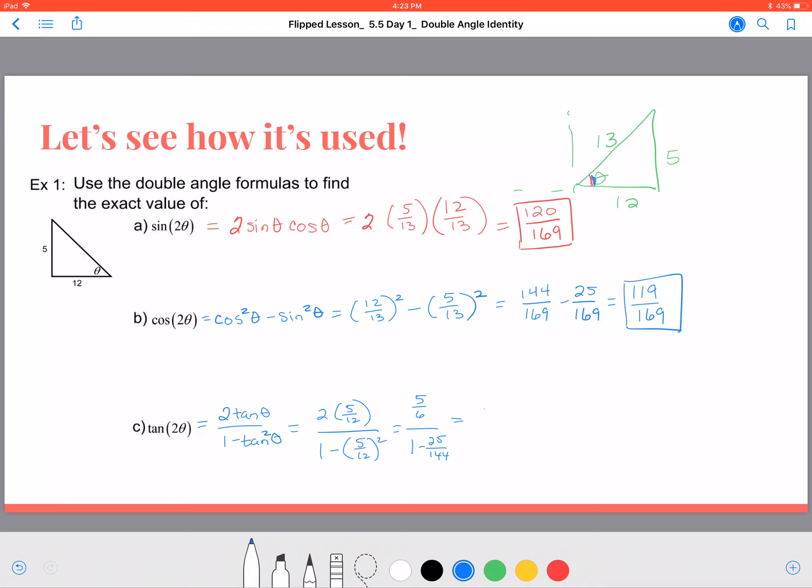And we're going to divide that by 1 minus 25 over 144. So we have 5 over 6 divided by 1 minus 25 over 144. That'll be 144 over 144 minus 25 over 144, which equals 119 over 144.